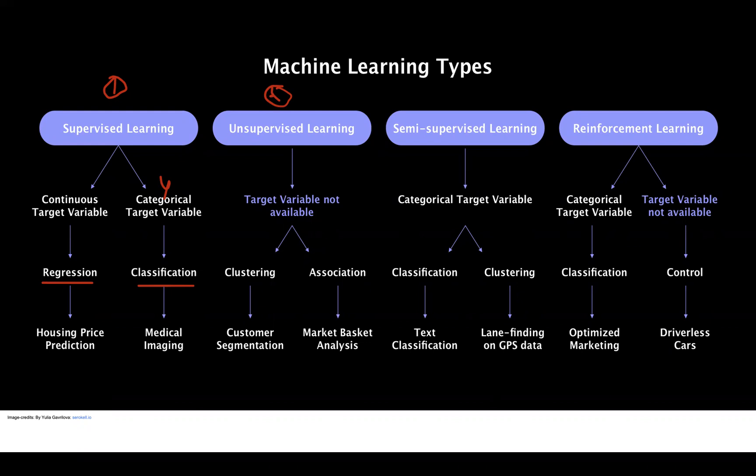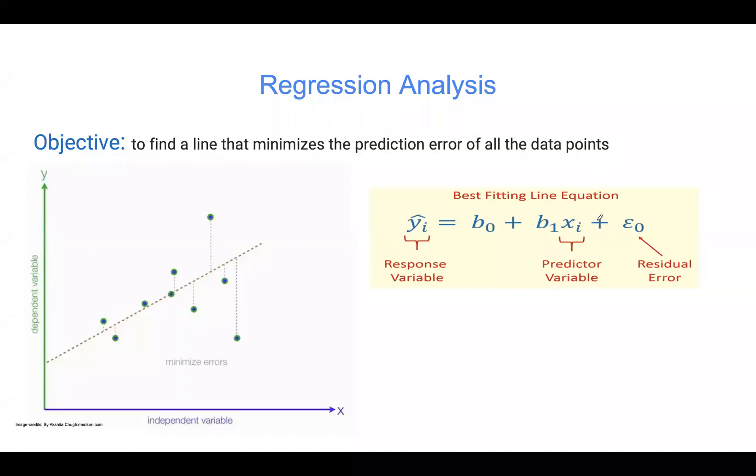So what's regression analysis? Regression analysis is used when we want to predict a continuous dependent variable from a number of independent variables. So X here will be the independent variable.